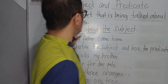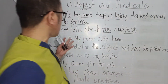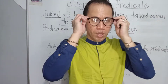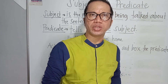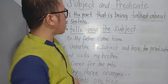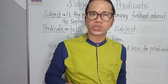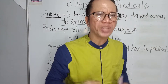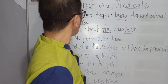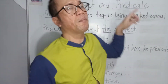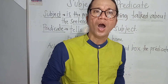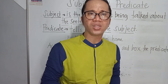Again, the subject is the part that is being talked about in the sentence, and the predicate tells about the subject. A sentence is related to our topic which is subject and predicate. A sentence has two parts — and those two parts are related to the subject and the predicate. I'm going to show you how to identify the subject and the predicate in each sentence.